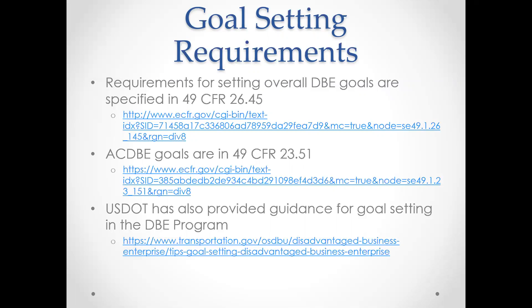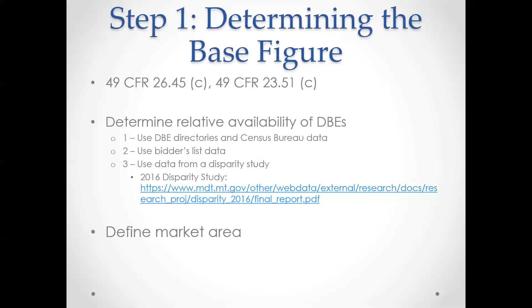I included some links here for how you actually set the goals. The DBE and ACDBE — Airport Concessionaire DBE — goals are pretty similar in their requirements but have different links. USDOT also publishes guidance with tips for goal setting, and we used those references. The first part is determining the base figure: how many DBE firms do the types of work you're planning for the next three years, divided by the total number of firms.